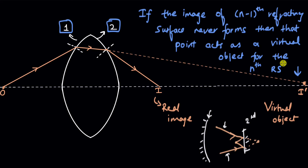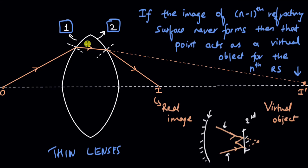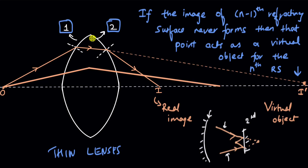Let's see how we can use this idea of virtual objects in numericals. In numericals we deal with thin lenses — not thick convex lenses. With a thin lens we show the ray undergoing refraction only once from the center of the lens, treating it as a single refracting surface.